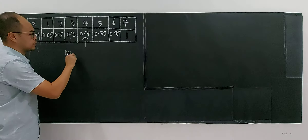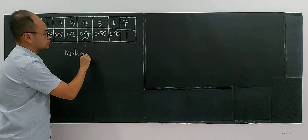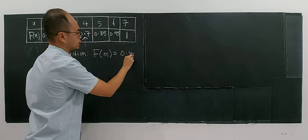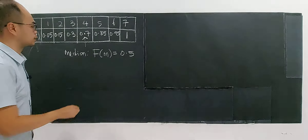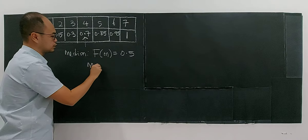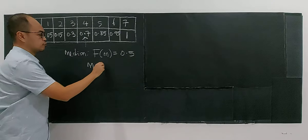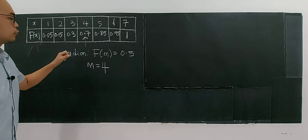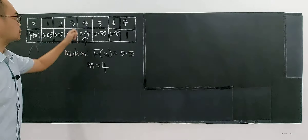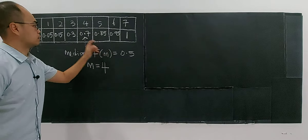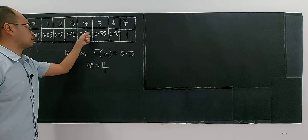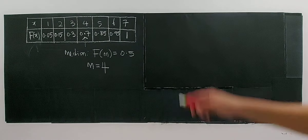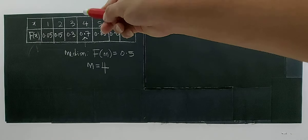So the median in this case, or you can just write fm, equals 0.5. What is the median here? The median is actually the random variable value 4. The median will be m equals to 4, or we say x equals to 4. As long as you see that the cumulative probability starts to be more than 0.5, we take that random variable at that particular point as the median.